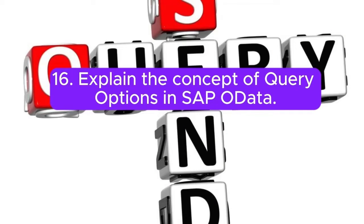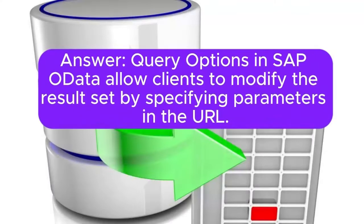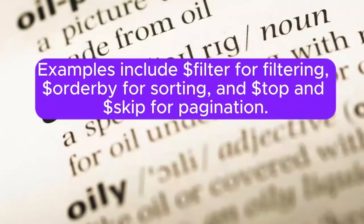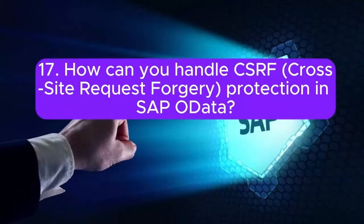Question 16: Explain the concept of query options in SAP OData. Query options in SAP OData allow clients to modify the result set by specifying parameters in the URL. Examples include $filter for filtering, $orderby for sorting, and $top and $skip for pagination.